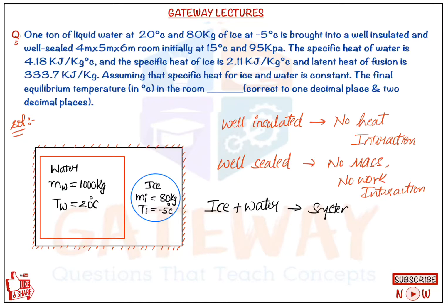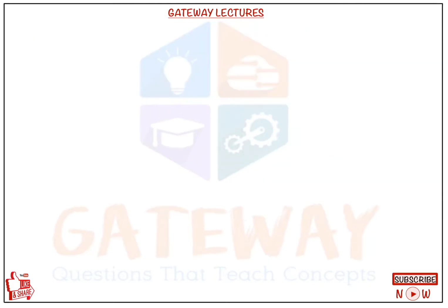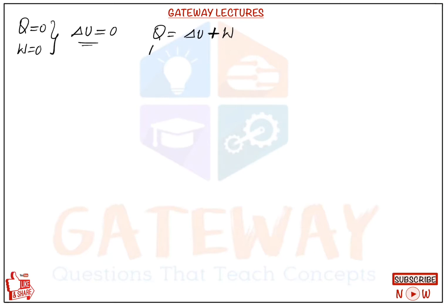Ice and water is taken as the system, and the surrounding is the outside atmosphere. Since it is a well-insulated and well-sealed room, this is an isolated system. For an isolated system, the heat interaction Q is zero and the work interaction W is zero. By the first law of thermodynamics, Q = ΔU + W, so ΔU = 0. This ΔU is for the system — both ice and water — so it is ΔU_ice + ΔU_water = 0.